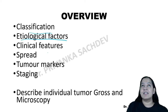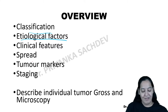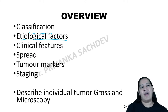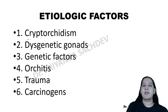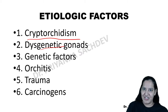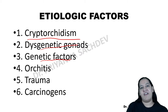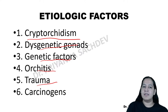Now the risk factors for testicular tumor. There are six: (1) Cryptorchidism — the most important; (2) Dysgenetic gonads; (3) Genetic factors or family history; (4) Orchitis — infection in the testis; (5) Trauma to the testis; (6) Carcinogens — drugs, chemicals, radiation. Let us discuss each one.